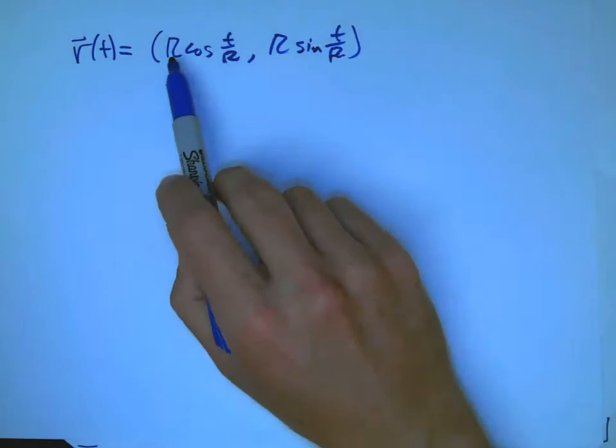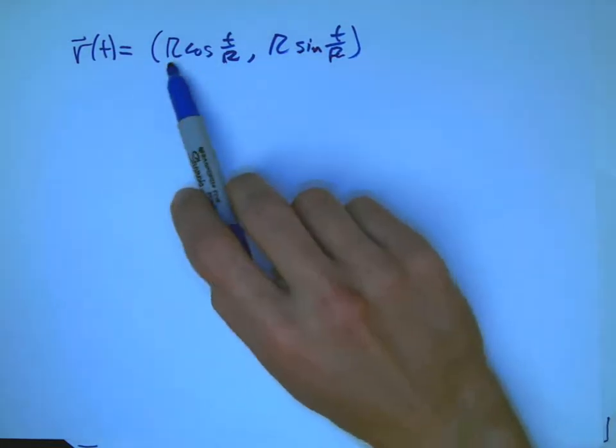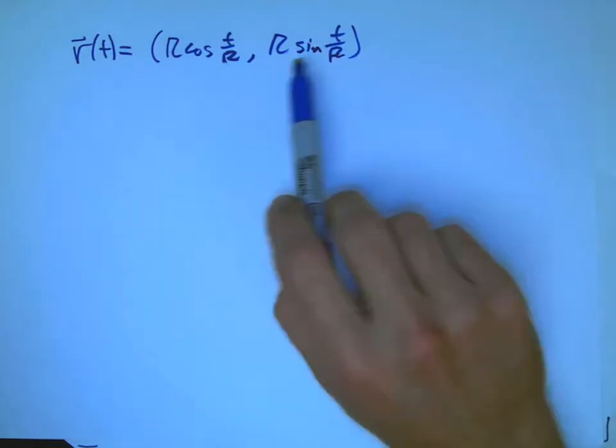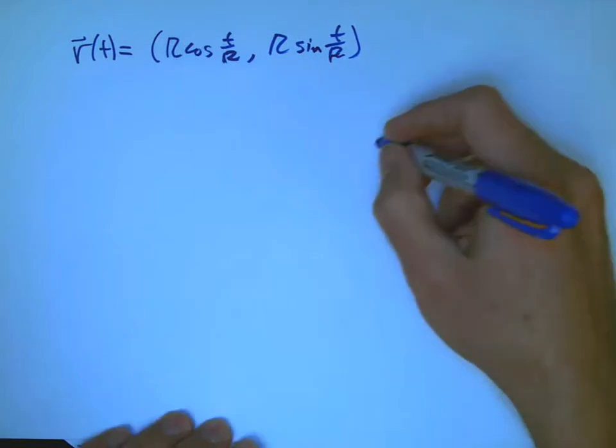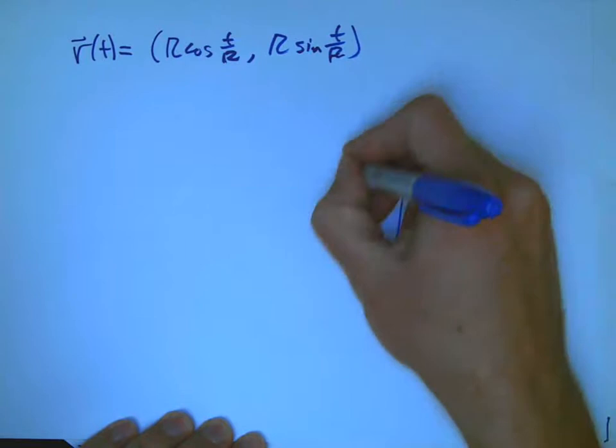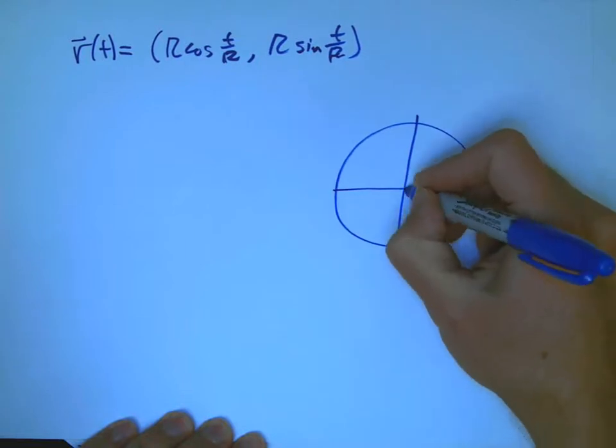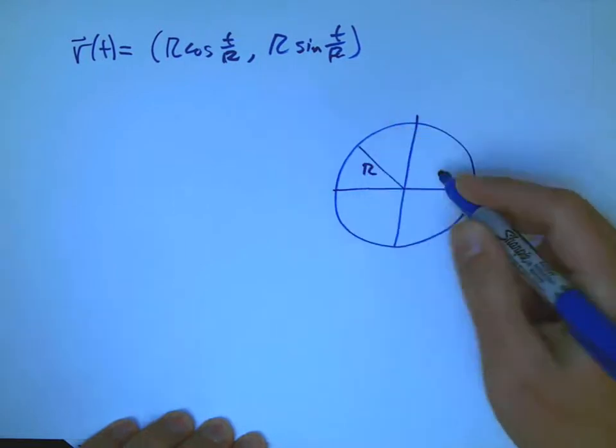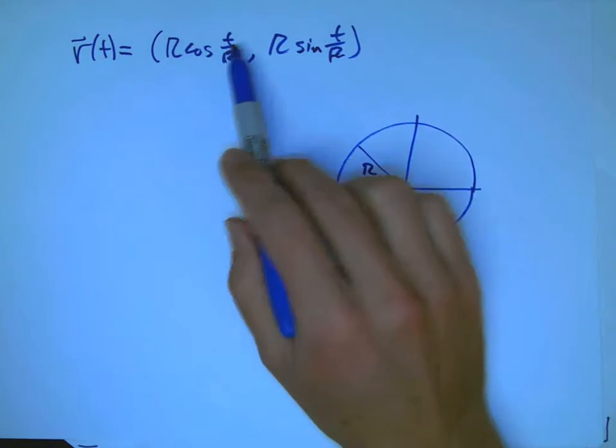Let's think about what this parametrizes. It's still r cosine, r sine, and so it's going to parametrize a circle of radius r. But I'm not just doing r cosine t, r sine t anymore.